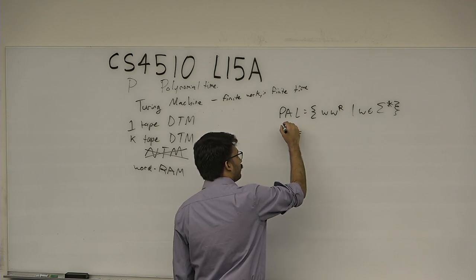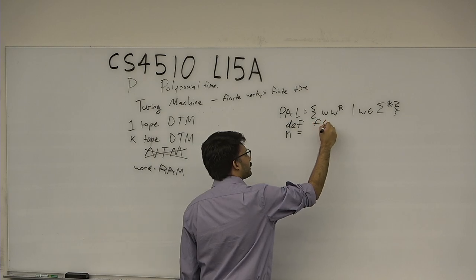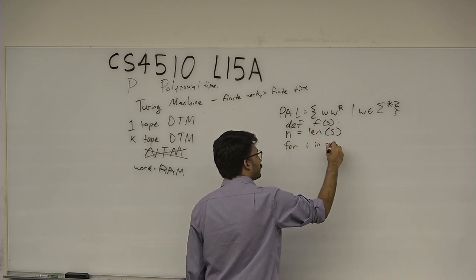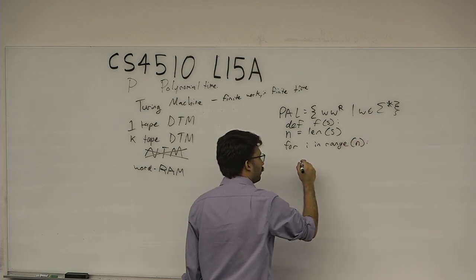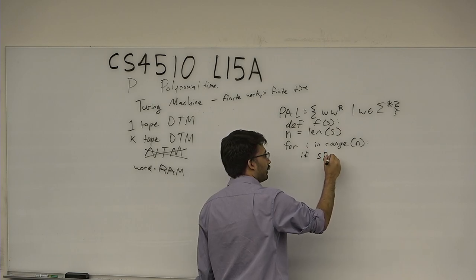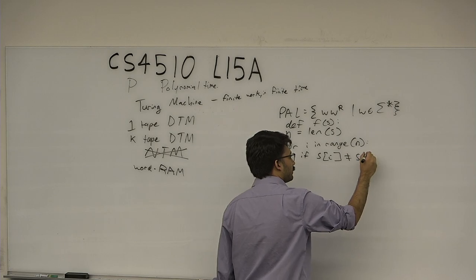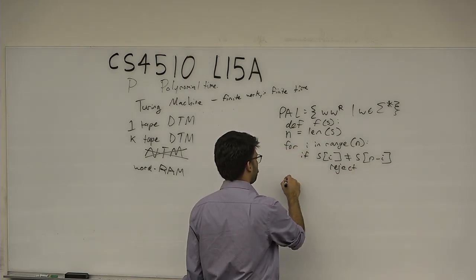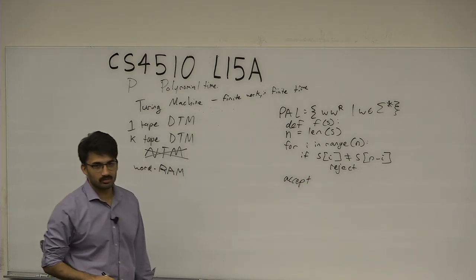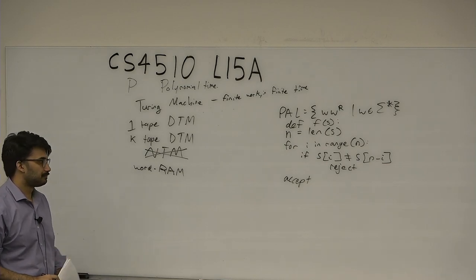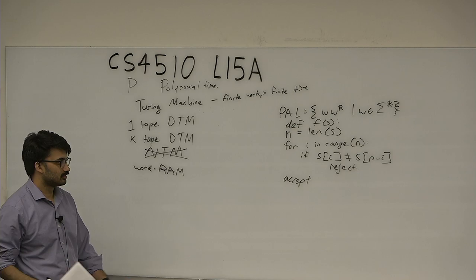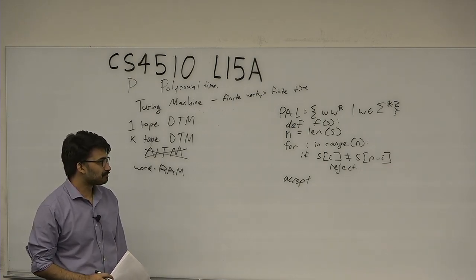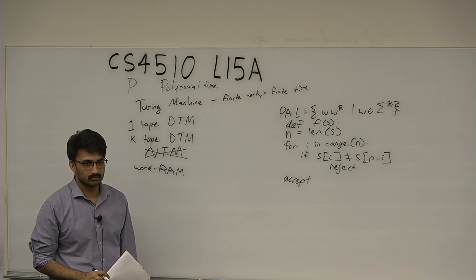def f(s): n = len(s); for i in range(n): if s[i] != s[n - i]: reject; accept. What's the runtime of this code? It's O(n). Given the high-level description of a word RAM model, we can decide PAL in O(n) time.